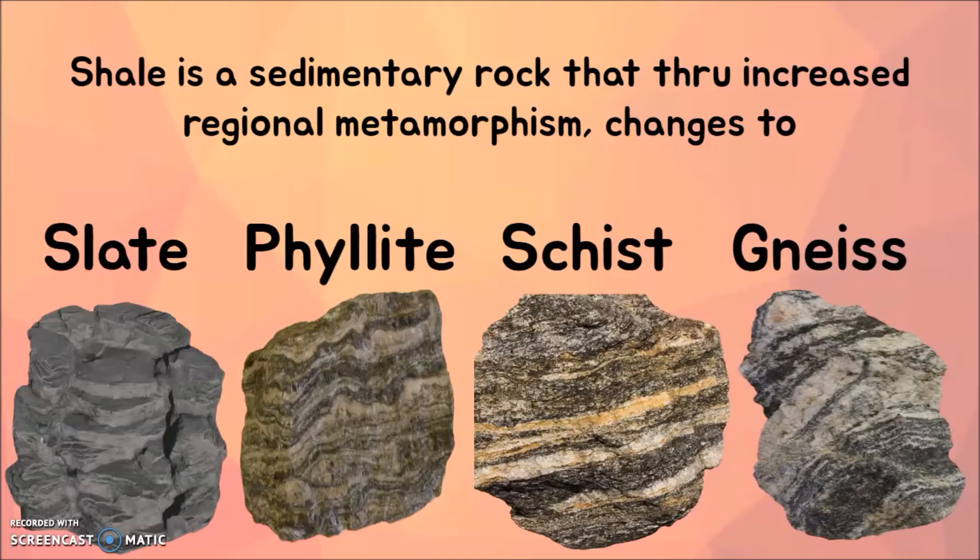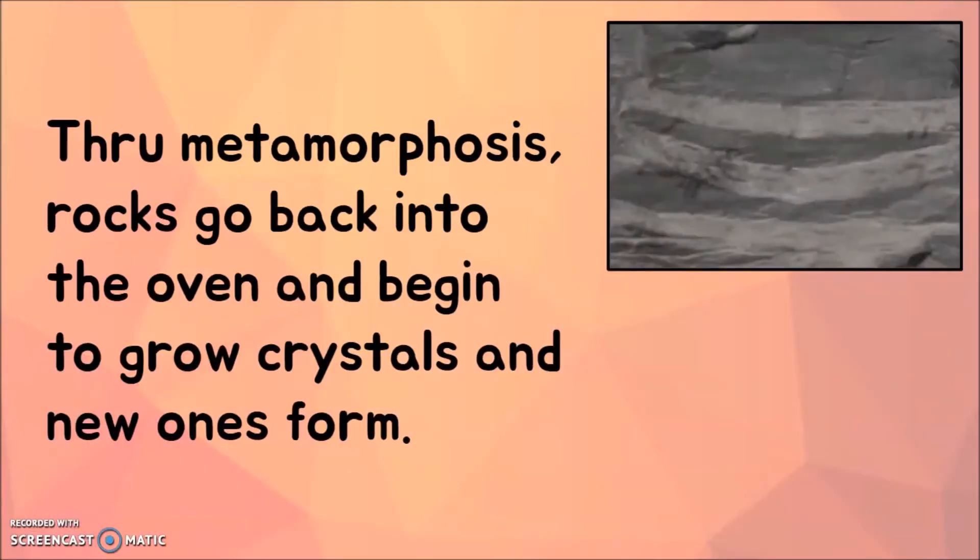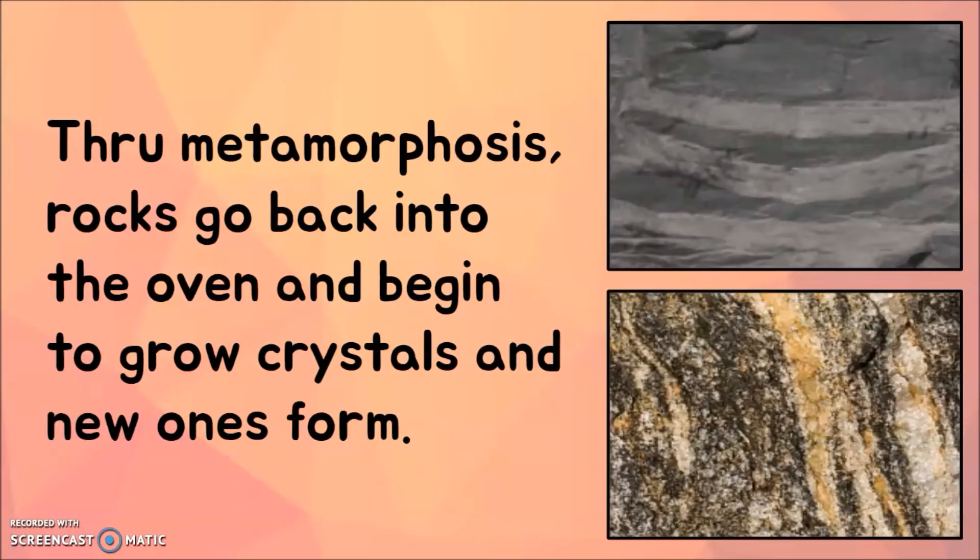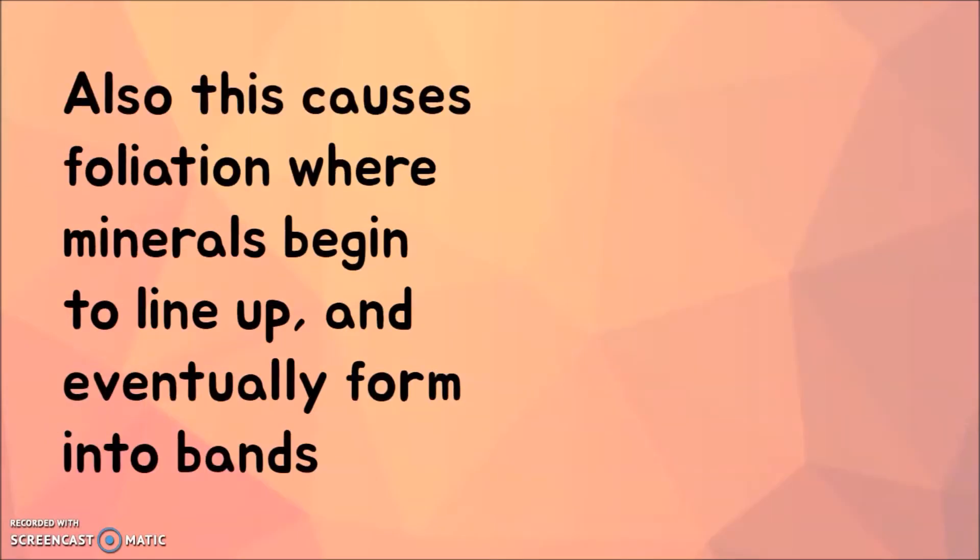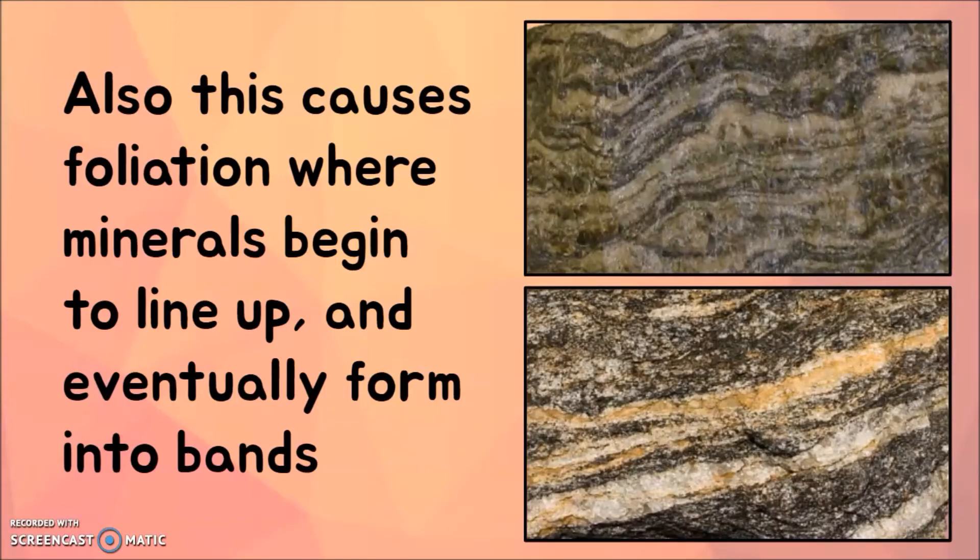Through increased heat and pressure, the minerals in the rock shale are going to change into different rocks. A few things will happen in metamorphic rocks, including that the minerals will recrystallize since they are exposed to new heat. Also, this causes foliation, which is where the minerals begin to line up and eventually form bands of the same minerals.